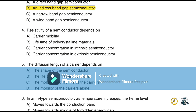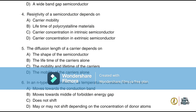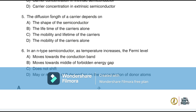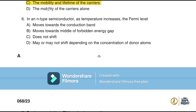The resistivity of a semiconductor depends on carrier mobility. The diffusion length of a carrier depends on the mobility and lifetime of the carriers. In an n-type semiconductor, as temperature increases, the Fermi level moves towards the middle of the forbidden energy gap.